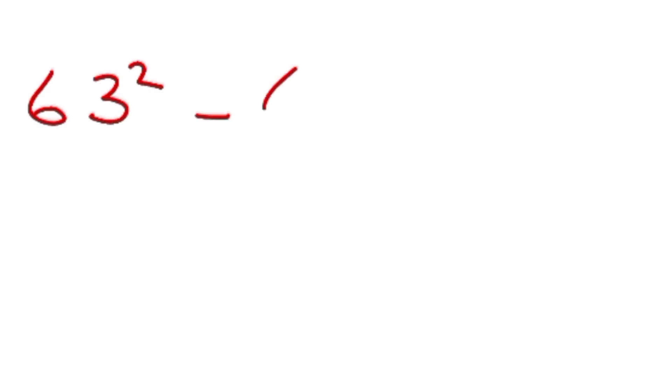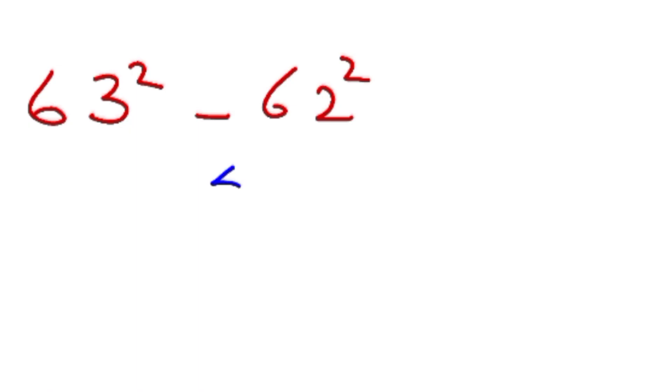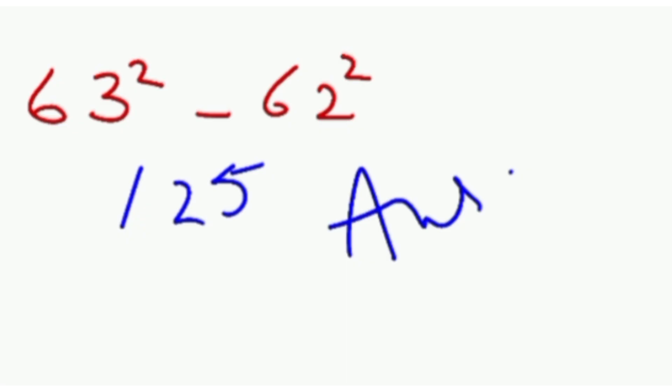Next question is 63 square minus 62 square. So with the same trick, when we add 63 and 62, we will get the answer 125, and this is the answer of 63 square minus 62 square. You can check.